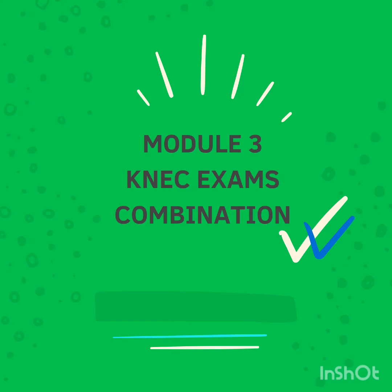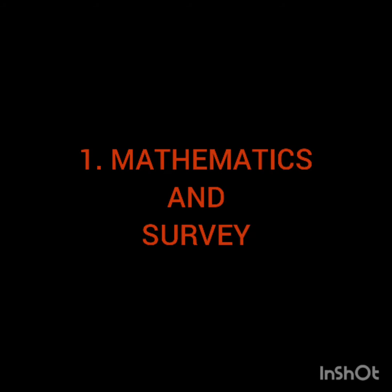Exam paper 1 will have mathematics and surveying. You'll choose two questions on mathematics and then two questions on the surveying part. Then one question you'll choose from either the mathematics side or the surveying part. Those will be five questions.